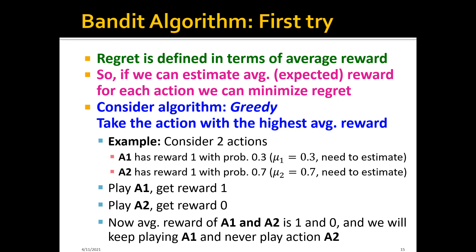Again, this is the ground truth average reward and it's unknown — we need to estimate it. Now let's say that in the first round, we play action A1 and we get a reward of one. In the second round, we play action A2 and we get a reward of zero. At this point, the average reward of A1 and A2 is one and zero respectively. According to the greedy algorithm, we'll just keep playing A1 and we'll never play A2, because A1 has a larger average reward than A2.